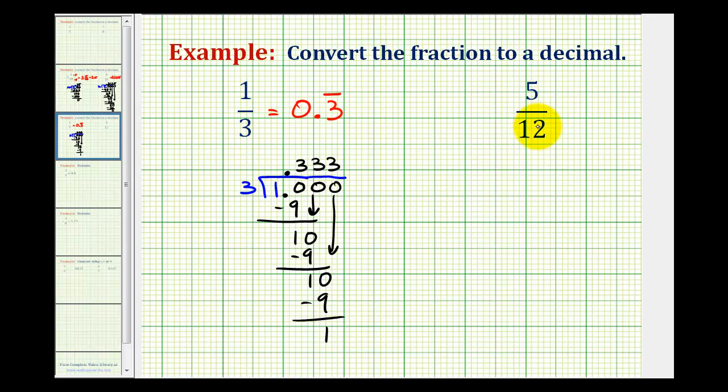For the second example, we have five-twelfths, which means five divided by twelve. So if we have five divided by twelve, again, we can put our decimal point to the right of five, move it up into the quotient, and now we can add zeros to the right as needed.